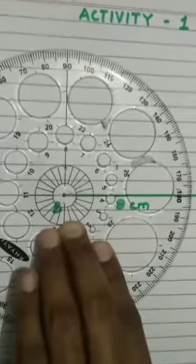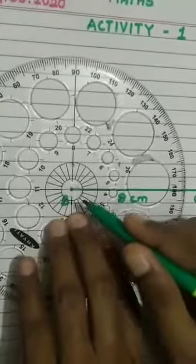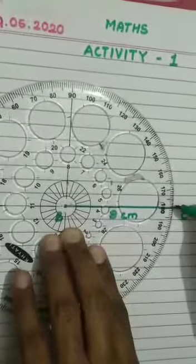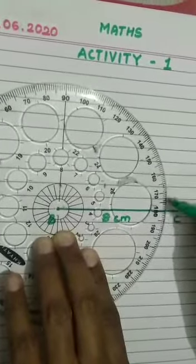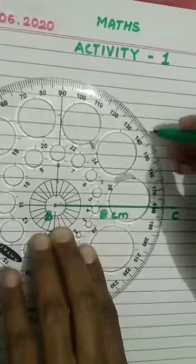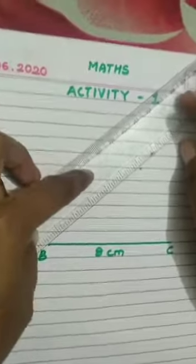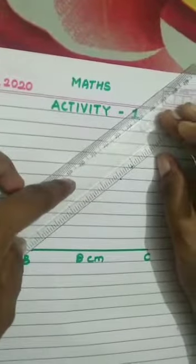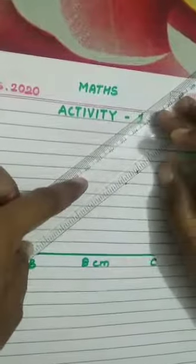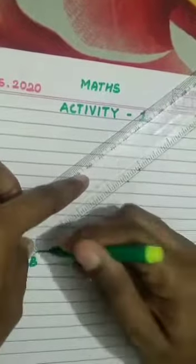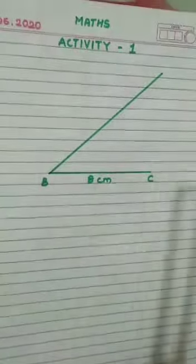Angle B is 40 degrees. 10, 20, 30, 40. Take a point and draw a ray passing through that point. Little bigger we have to draw.